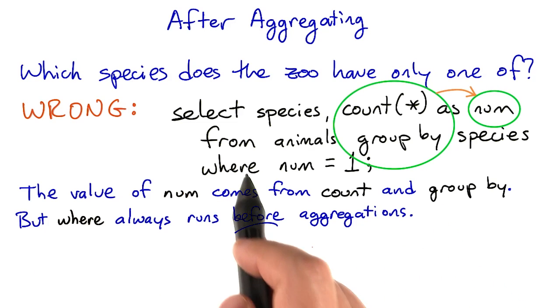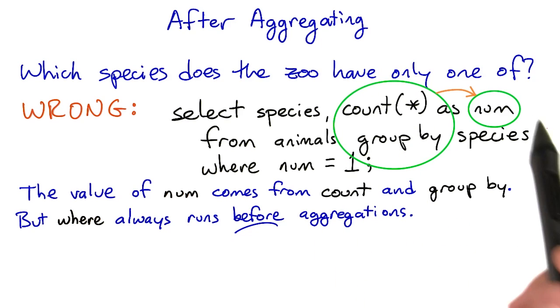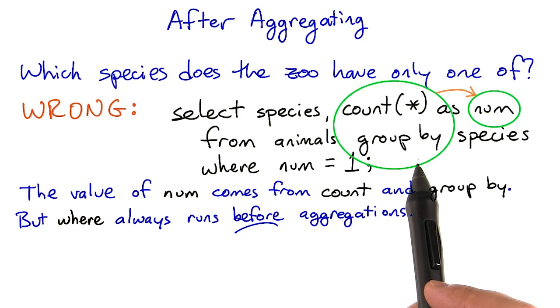The reason is that WHERE applies to the rows of the underlying table before count is performed. There's no num column in the animals table, and you can't use WHERE after a group by anyway.